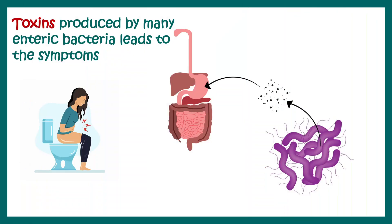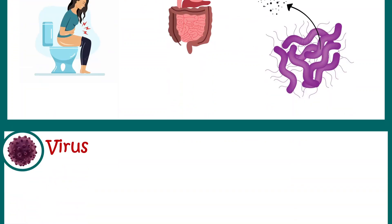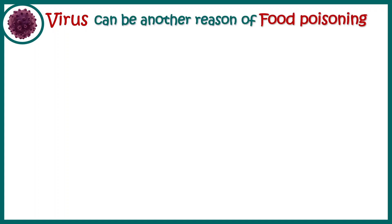In all of these bacterial infections, toxins produced by the bacteria lead to the discomfort experienced — including abdominal cramps and other GI tract problems. Now let's talk about viruses as a cause of food poisoning.